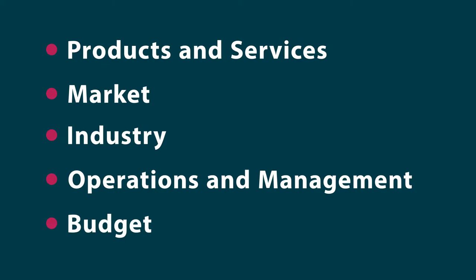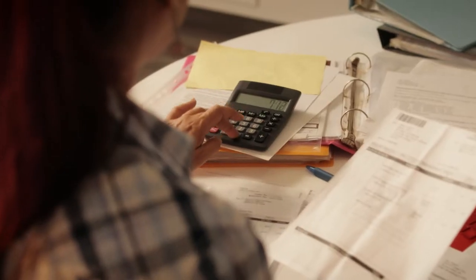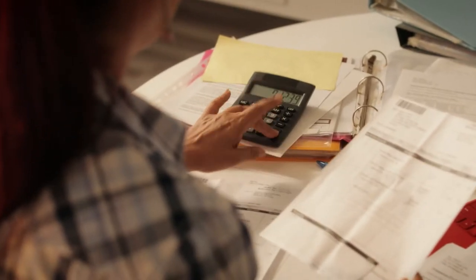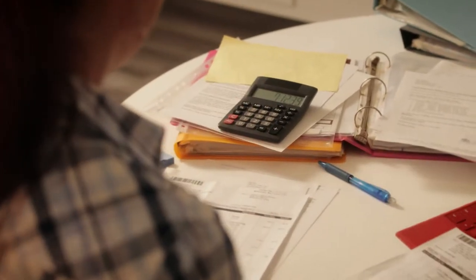Your plan will include information about the following: the type of business including the products and services offered, location, owners, and legal structure; what's going on in the industry; who are your customers and how will you market to them; and monthly revenue and expense projections with cash flow.